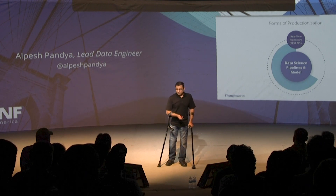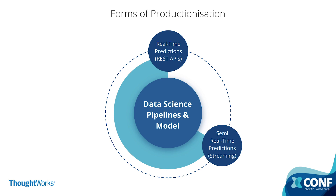We also have semi-real-time predictions. These are predictions applied on a stream of data coming into your organization - it can be a Kafka queue or a messaging queue like RabbitMQ. Usually people write consumers on those topics or queues to make predictions using the model, then either publish to another queue or process it to a file system.